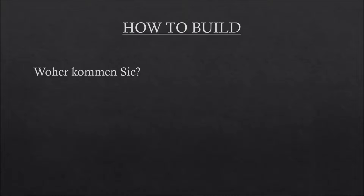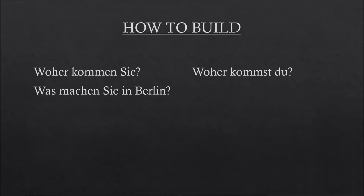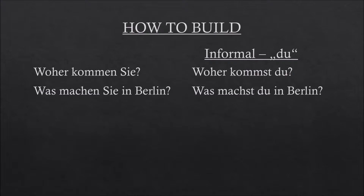David asked Anna two questions about where she comes from. Both questions mean 'where do you come from?' Later, both also ask 'what do you do in Berlin?' But David asks her 'Was machen Sie in Berlin?' and she asks him 'Was machst du in Berlin?' The difference is: du is the informal 'you' and Sie is the formal 'you.'